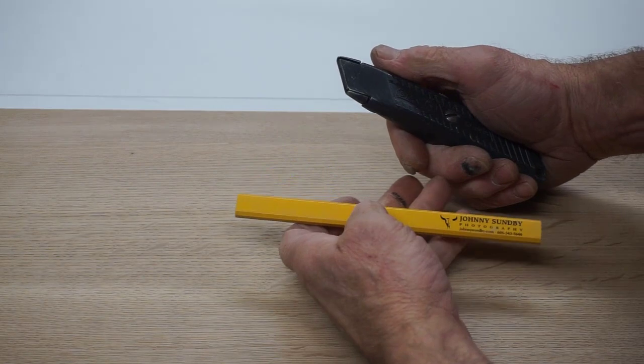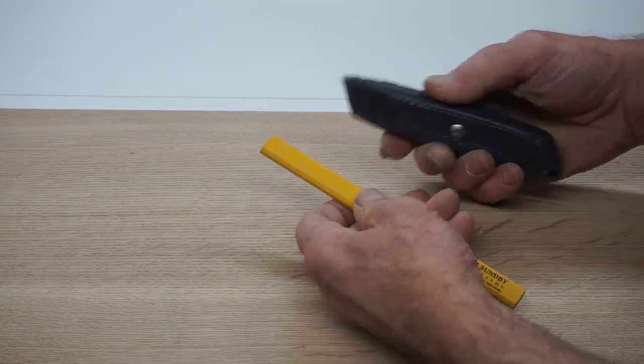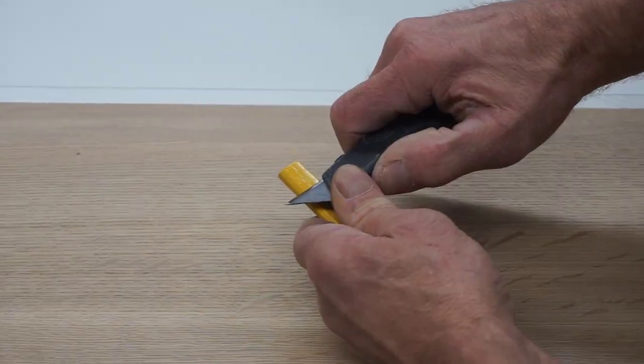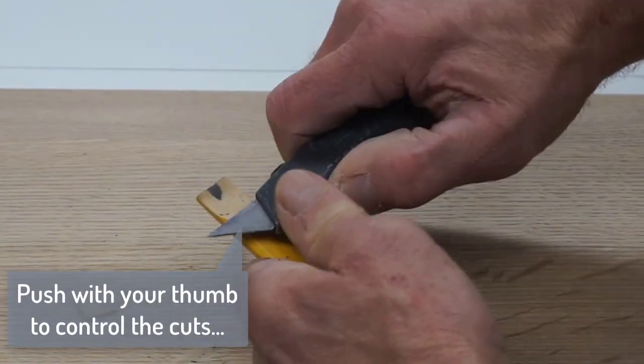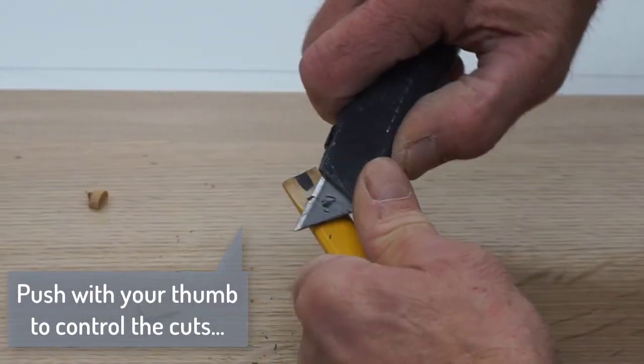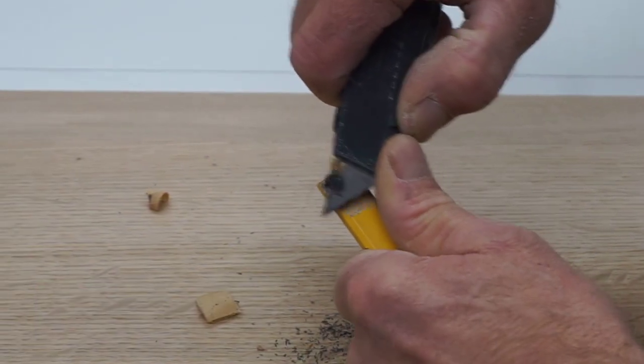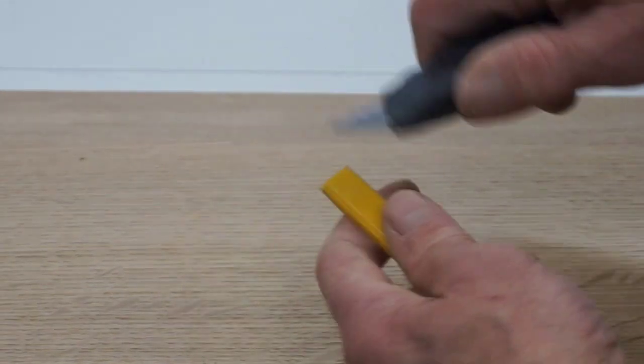Sharpening a carpenter's pencil with a classic point is nothing more than whittling with a purpose. Make sure you have a sharp knife and whittle the flat faces first, taking a number of passes to get down to the lead. This is when I shave the lead to make it thinner and sharper at the end.